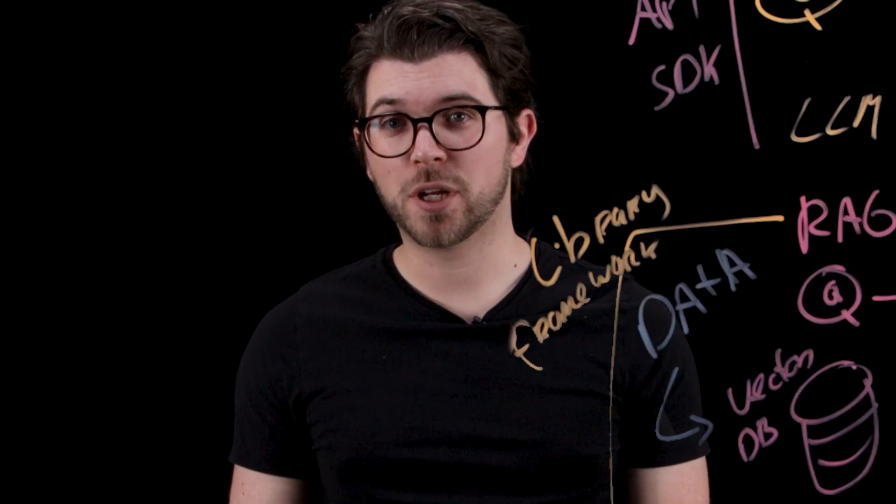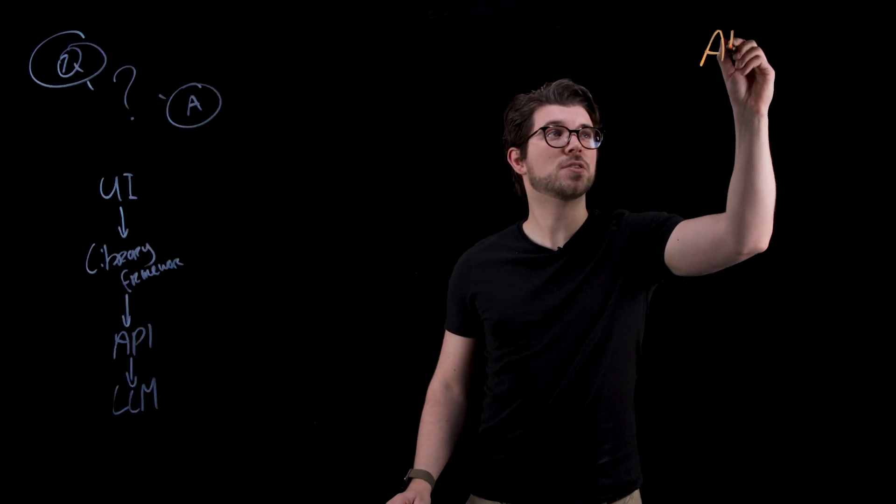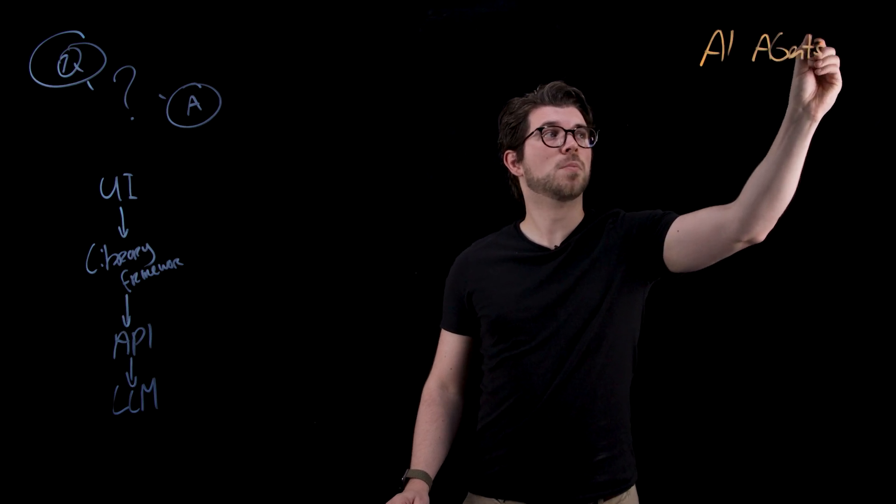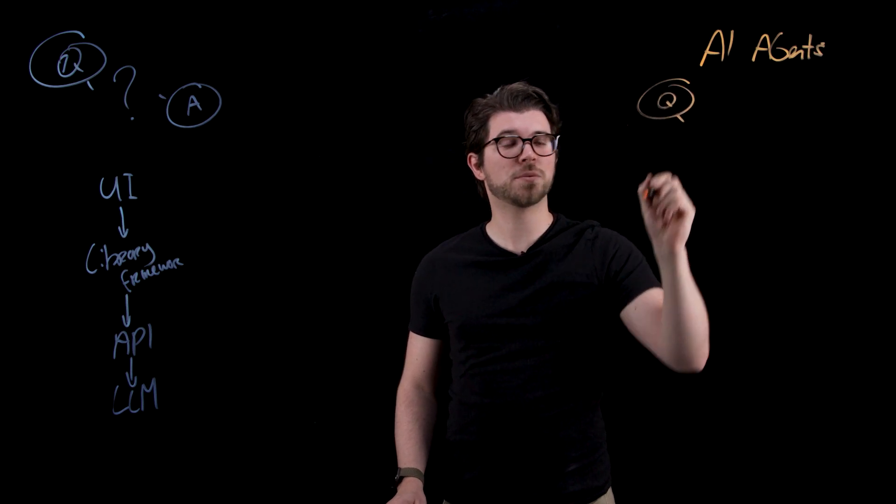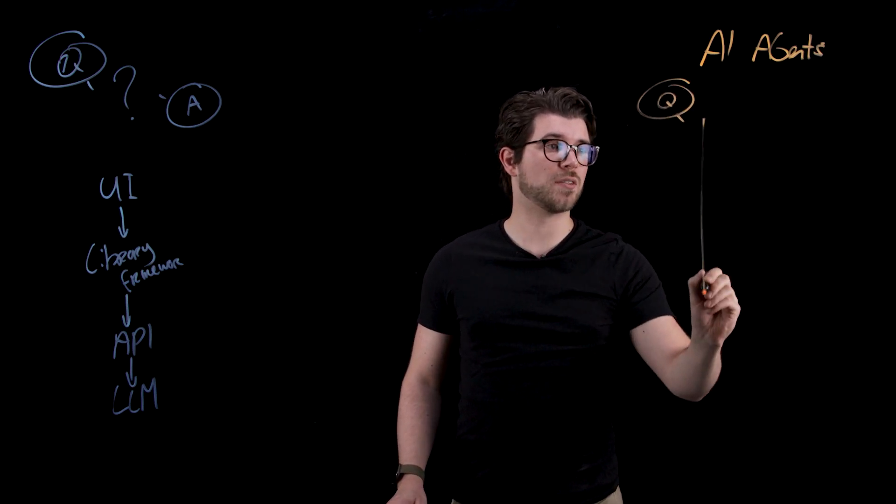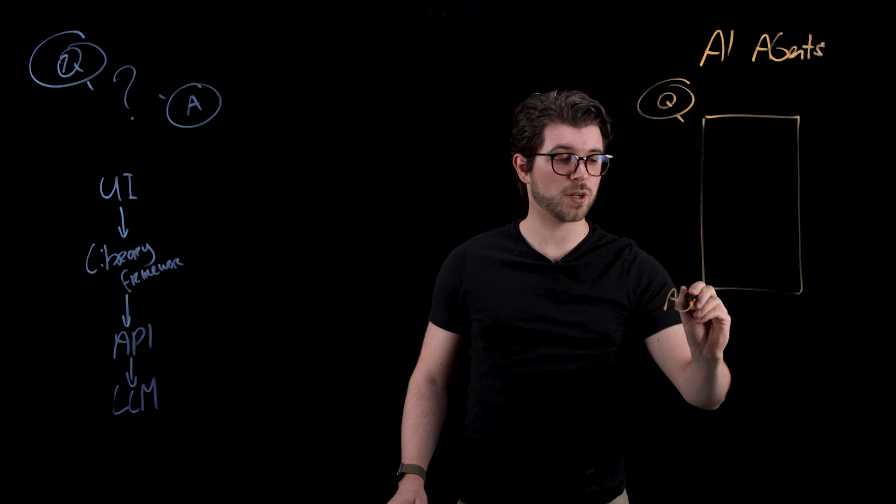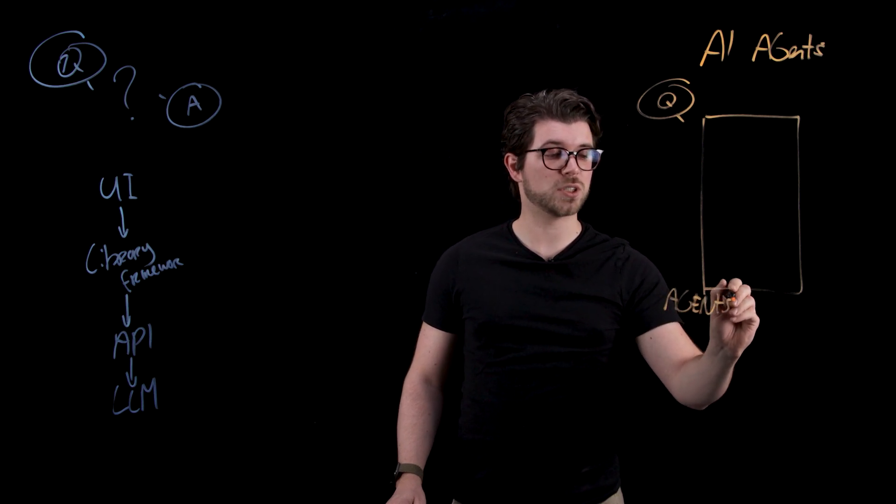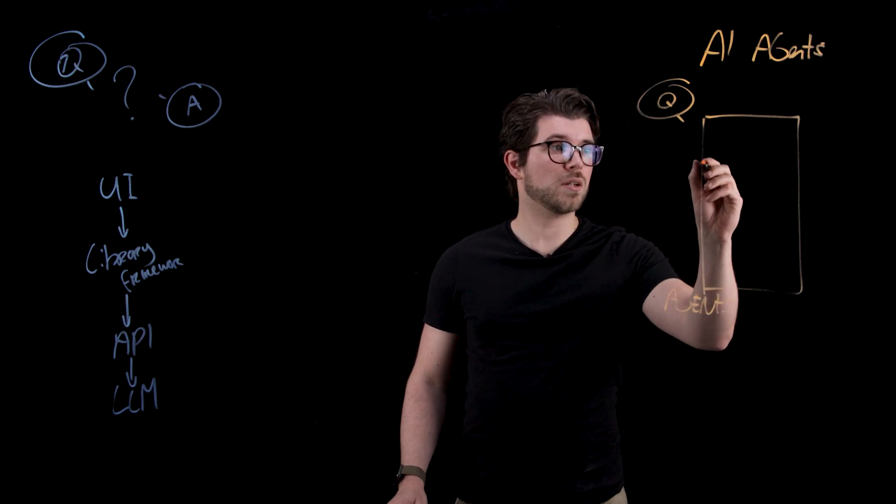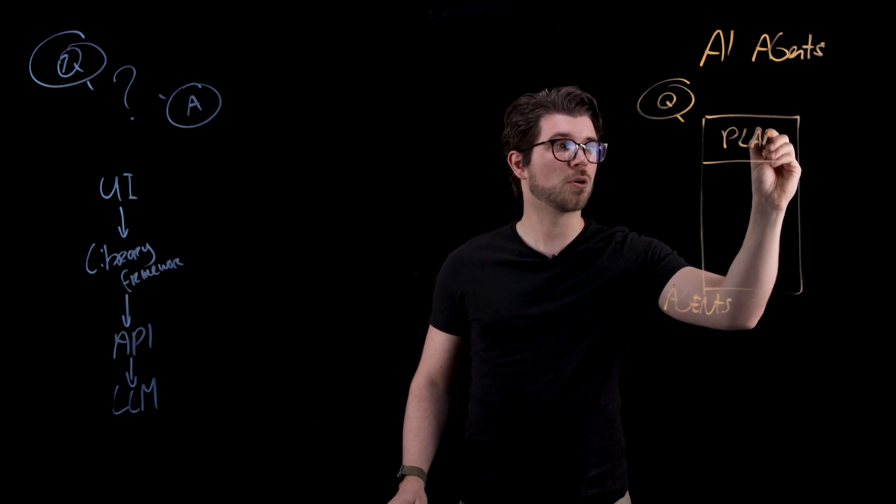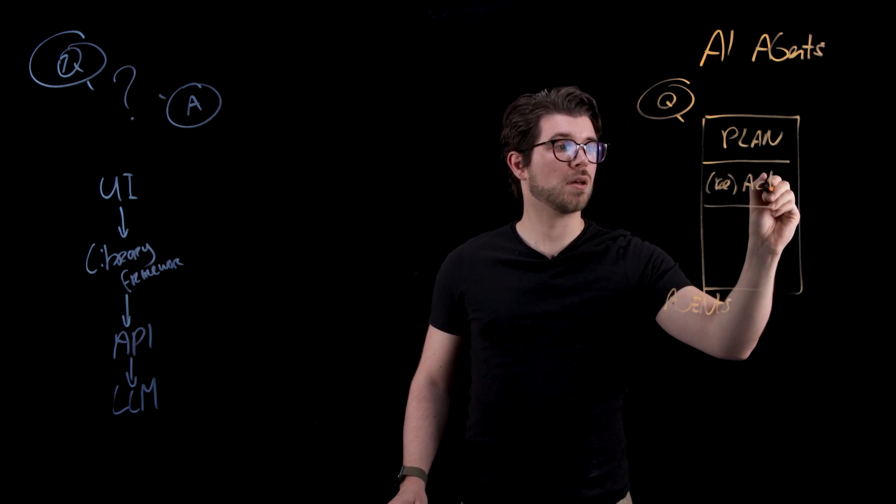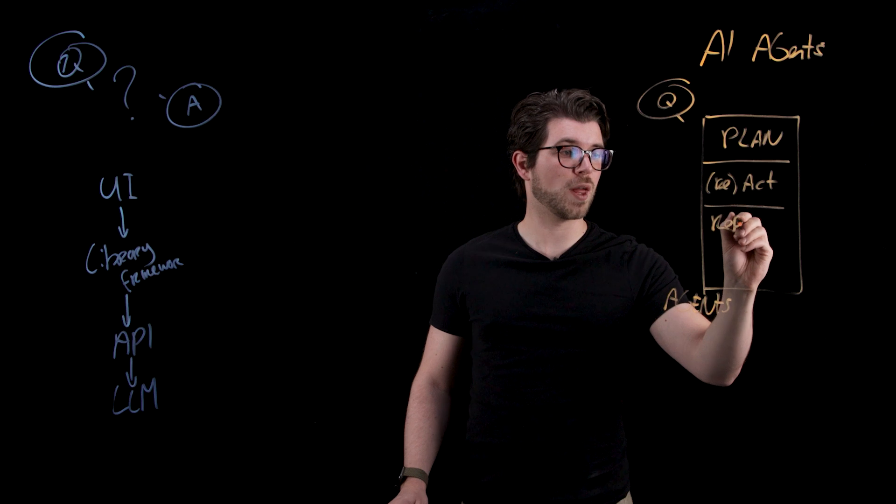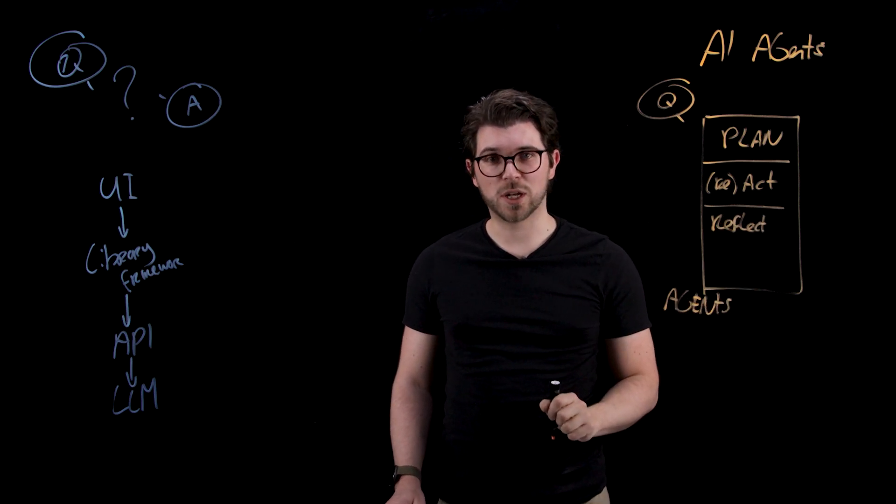So the final pattern you can implement as a web developer when building your AI application is AI agents. With AI agents you still have a question and a final answer, but this time you have an agent in the middle that will help you to answer the question. So we start again with a question. This time your question will be sent to the agent. There are multiple patterns to implement agents, and typically you use a framework or a library to do this. The agent will typically plan based on your question and the available tools. It will act or react based on the tool calls, and then finally it's going to reflect and see if your answer is matching the question.